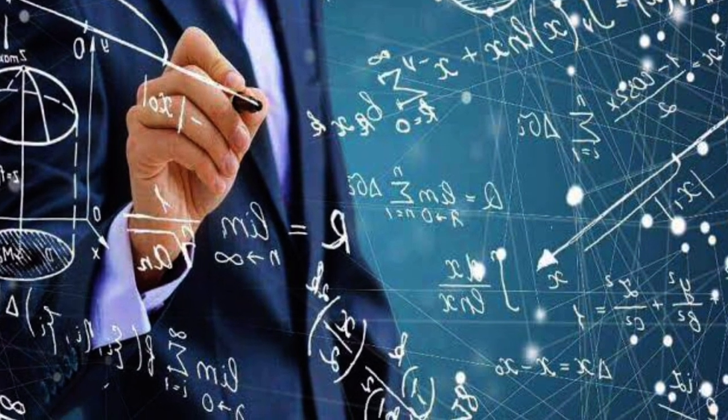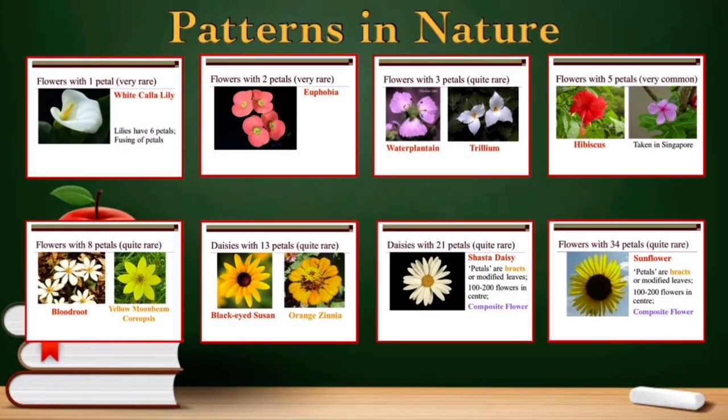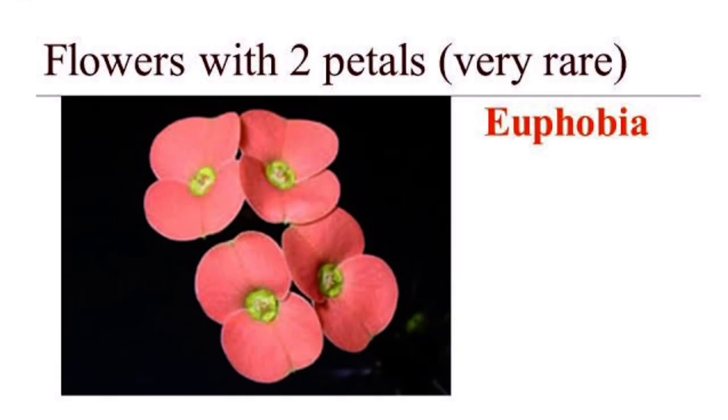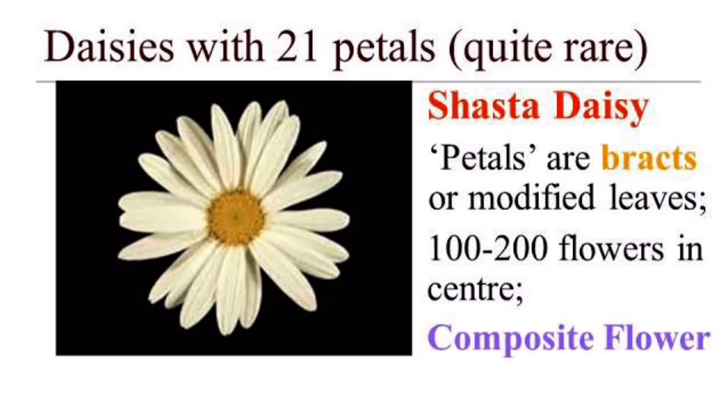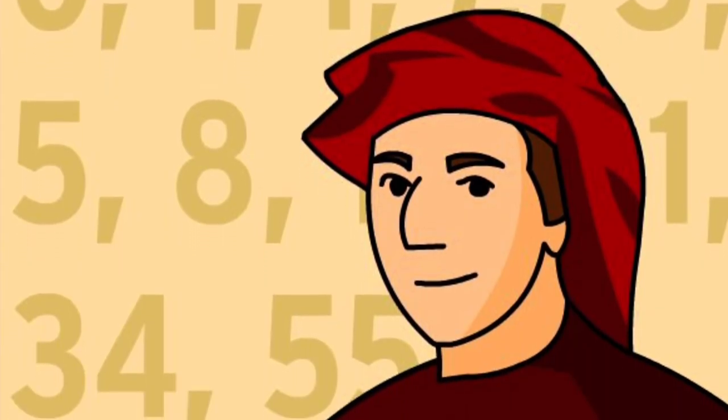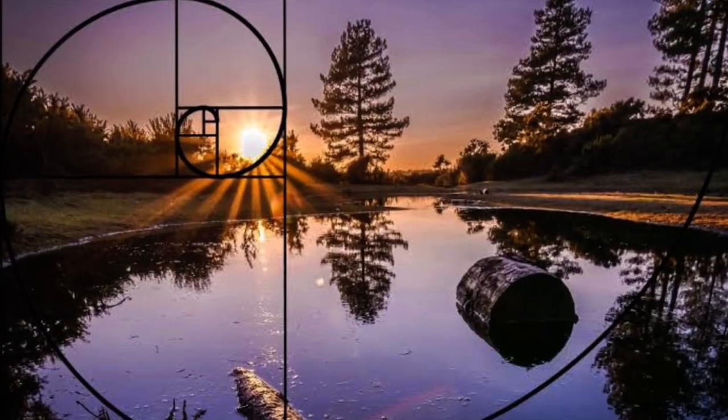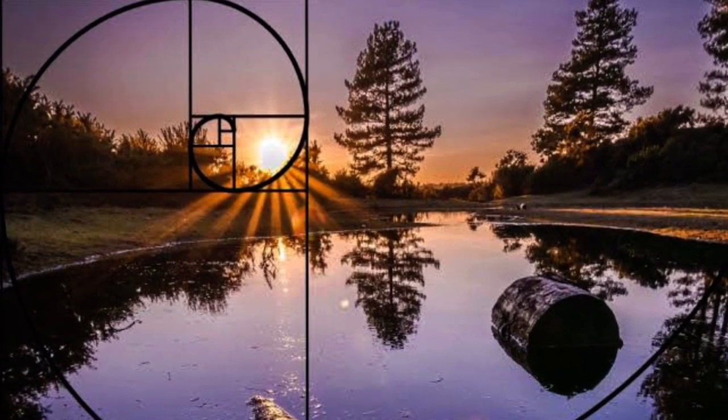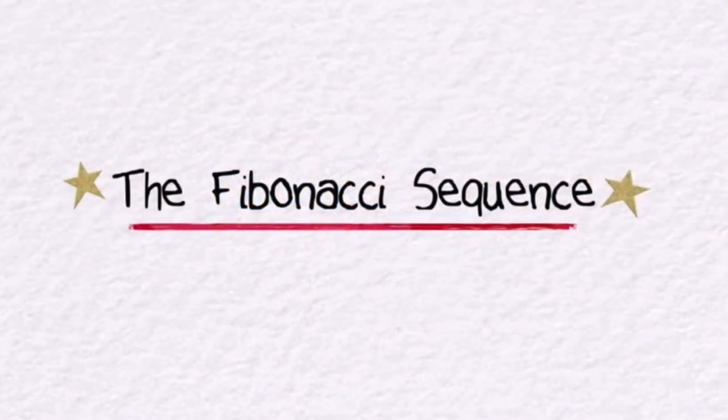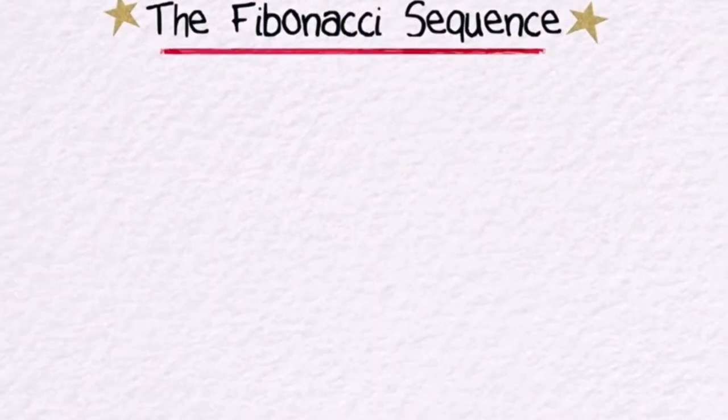Have you ever counted the number of petals in a flower? You might think any number is possible, but you might be surprised because nature seems to favor a particular set of numbers like 1, 2, 3, 5, 8, and 13. It may seem a coincidence to you, but this sort of numbers form a pattern. In the sequence, the next number is found by adding up the two numbers before it.